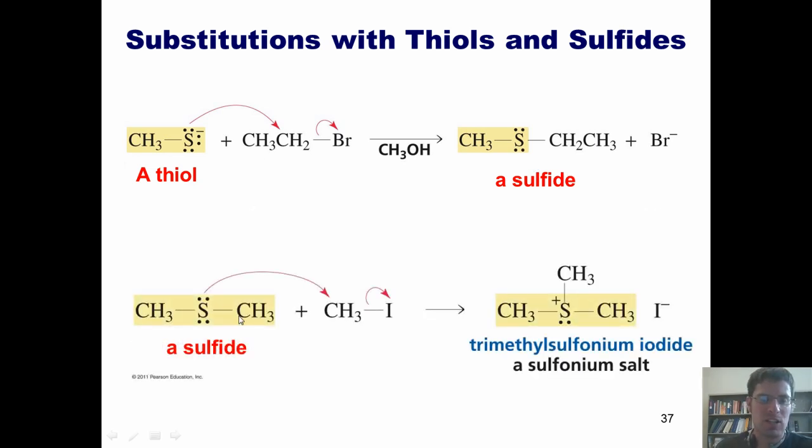Similarly, you can take a sulfide and treat it with an additional alkyl halide to form this type of product called a trimethyl sulfonium iodide. As with our quaternary ammonium salts, sulfur can handle a positive charge, not because it lacks a full octet, but because it's forming more bonds than it likes to in a neutral state. So these are substitution reactions with thiols and sulfides.